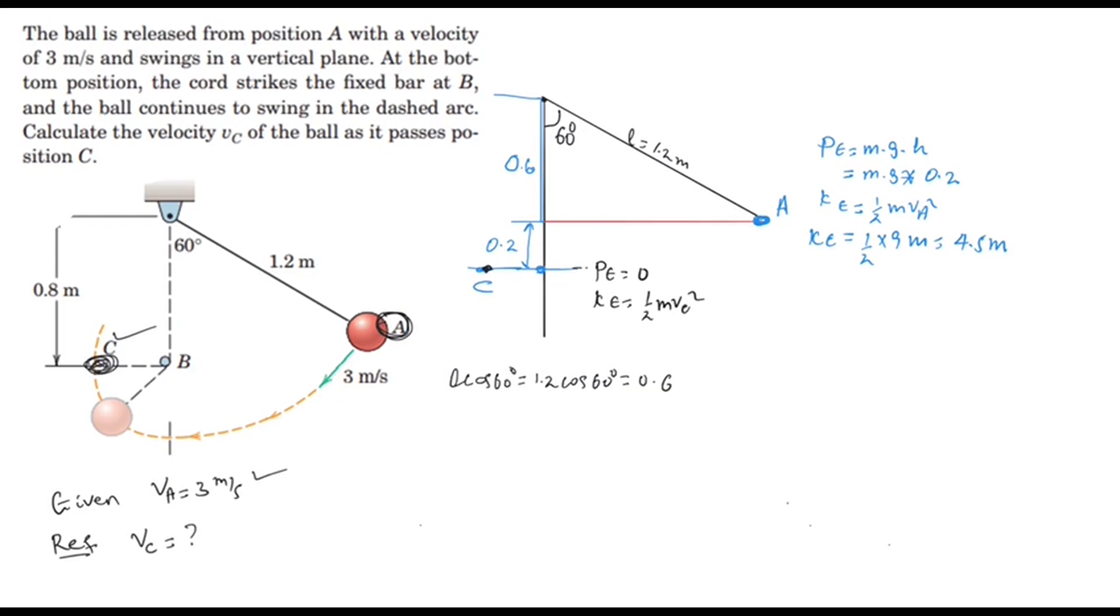We have no other work - the work from point A to point C is zero because there is no external force applied over the system.